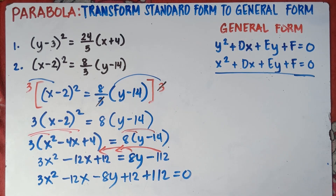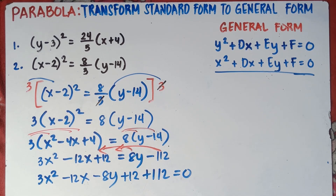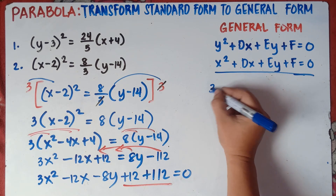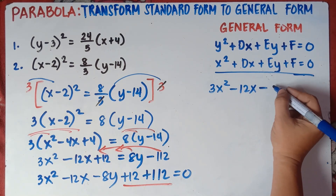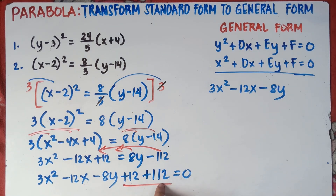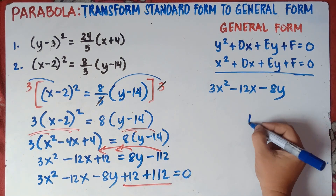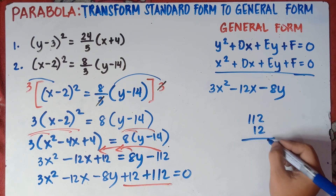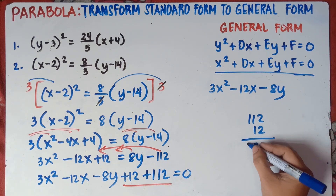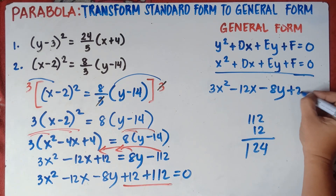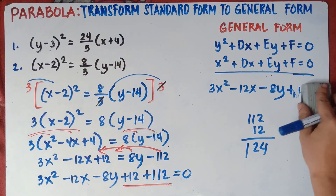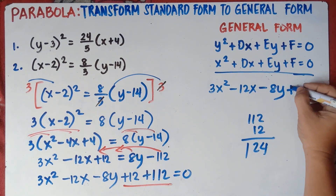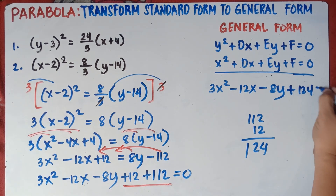Check for like terms. We can combine the constants: 12 + 112 = 124. So the equation becomes: 3x² − 12x − 8y + 124 = 0.